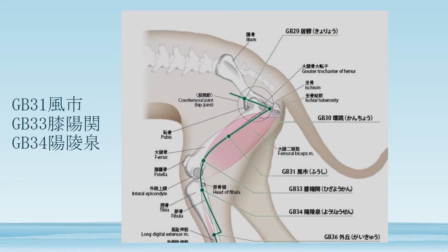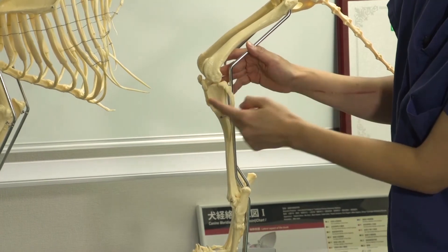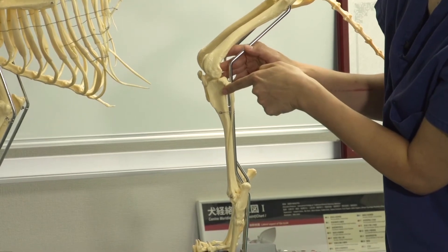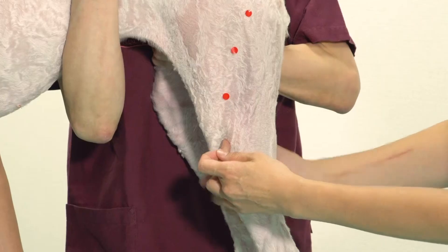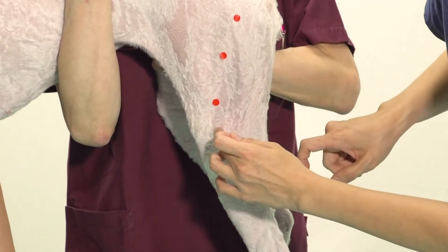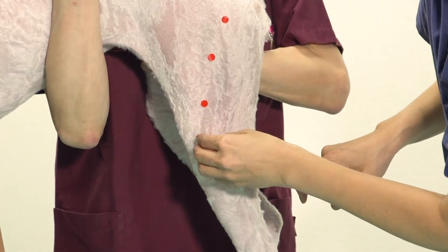GB34 is anterior inferior to the fibula head. The tibia and fibula meet at the fibula head, and anterior inferior to that point is where you locate GB34.